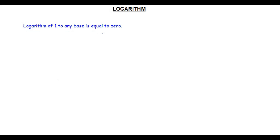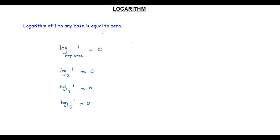Let's look at the next stuff on logarithm: the logarithm of 1 to any base is equal to 0. When we do problems on logarithm, if we get 1 in the argument, its value equals 0 regardless of the base. For example: log 1 to the base 2 is 0, log 1 to the base 3 is 0, log 1 to the base 5 is 0.